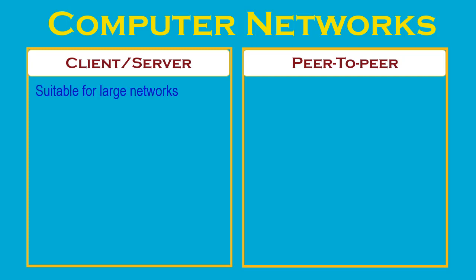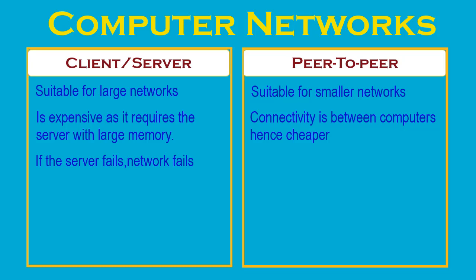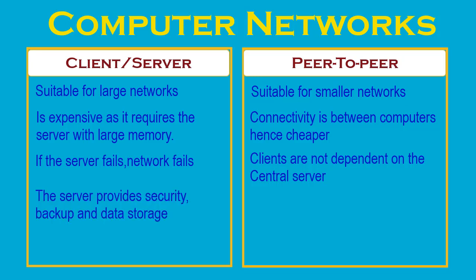Client-server setup is suitable for large networks while peer-to-peer is useful for small environments, usually up to 10 computers. Client-server network is expensive as it requires a server with large memory, while peer-to-peer is cheaper as it only requires connectivity between computers. In client-server architecture, clients are dependent on the server — if the server fails, the network comes to a standstill. In peer-to-peer, clients are not dependent on a central server, so if any machine fails, the network continues to run. Client-server offers enhanced security, sharing and backup options with overall improved performance. In peer-to-peer, since each device manages itself, security is low and it lacks centralized file sharing or backup.